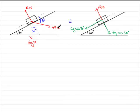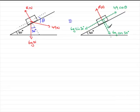For the 49 newtons, this can also be split into two components: one up the plane and one into the plane. The component up the plane contains the angle, so it's a cosine: 49 cos theta. The component into the plane doesn't contain the angle, so it's 49 sin theta. All of these are forces, so the units are newtons.